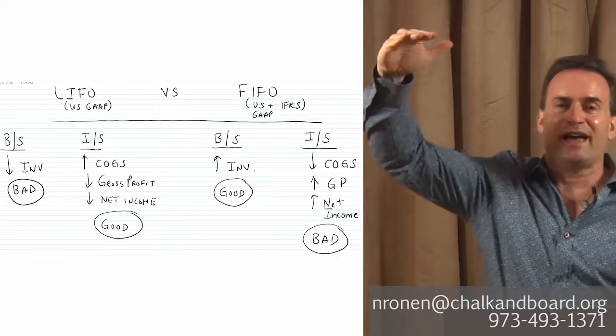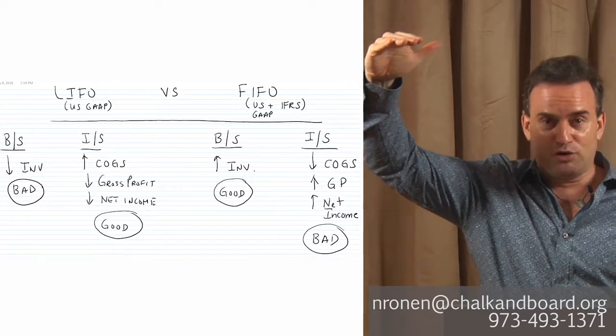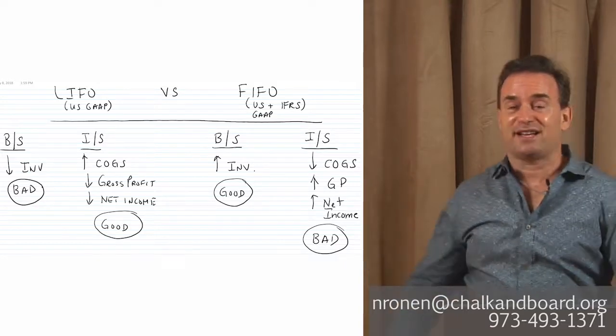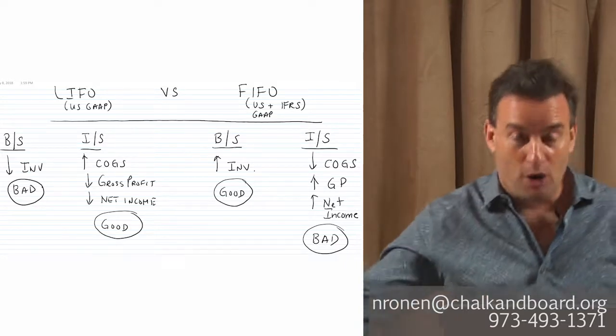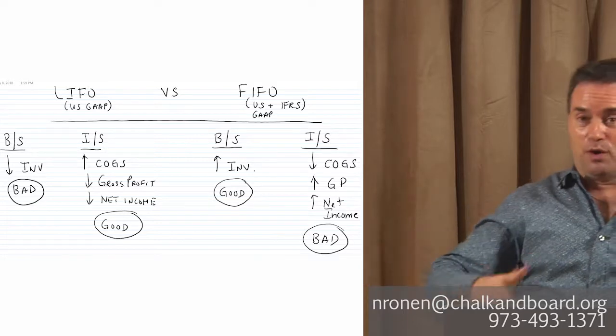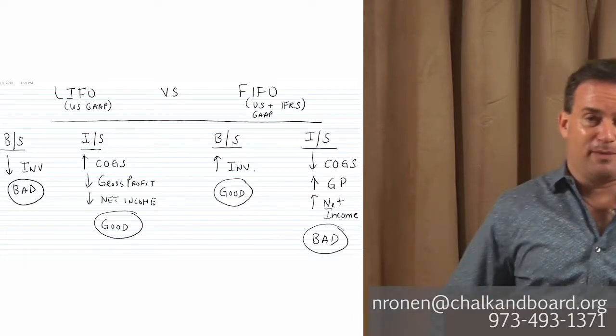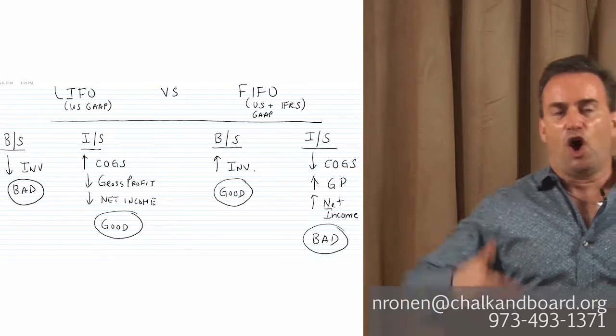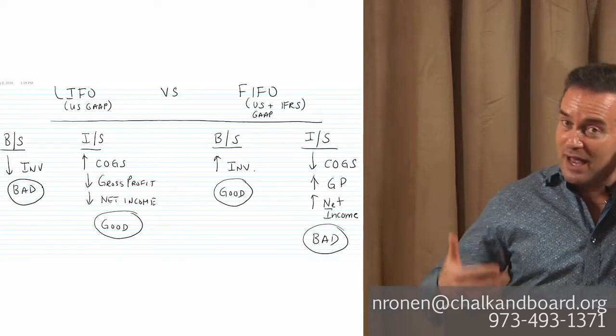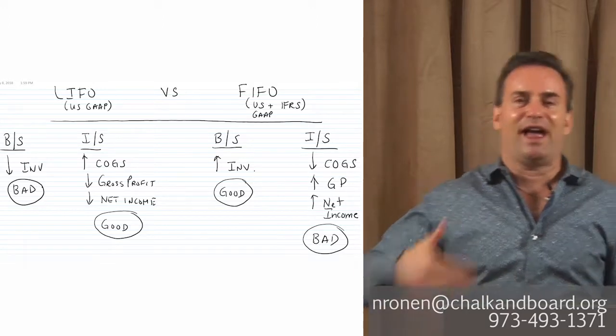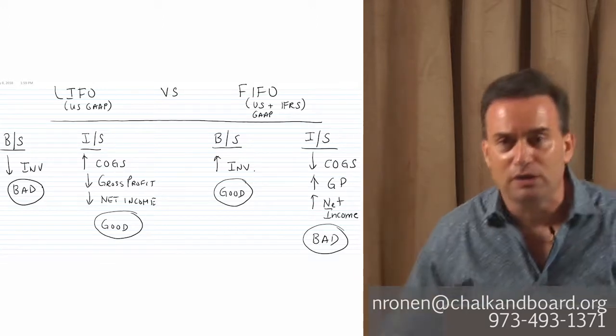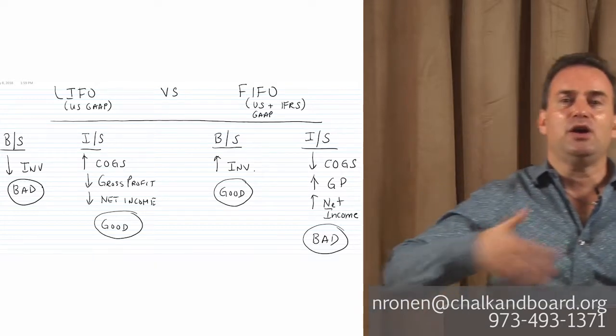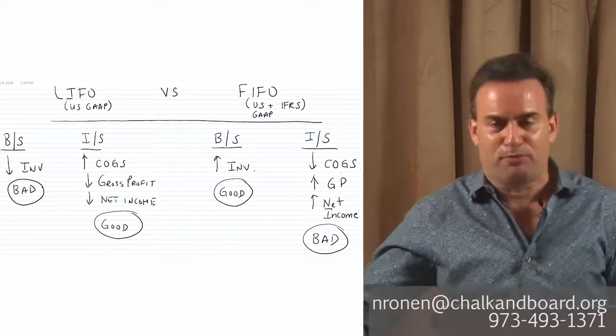And if my cost of goods sold is higher, then my gross profit will be lower. If my gross profit is lower, my taxable income will be lower. If my taxable income is lower, then the income taxes that I pay to the government is lower and my net income is lower. So basically what LIFO does on the income statement is LIFO creates a situation where I have a higher cost of goods sold, less profits, less taxable income, less taxes and less net profits.